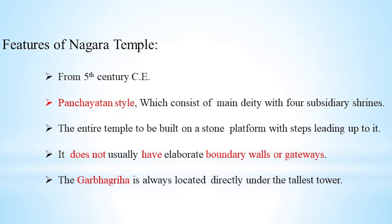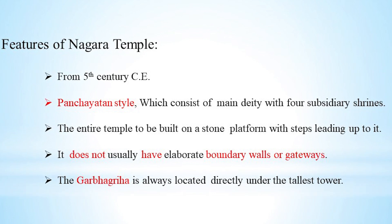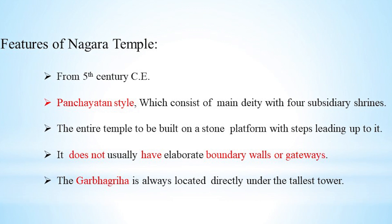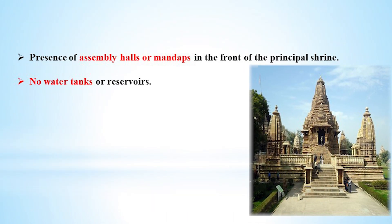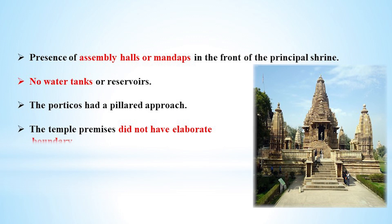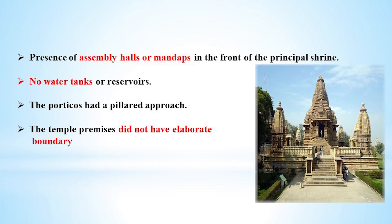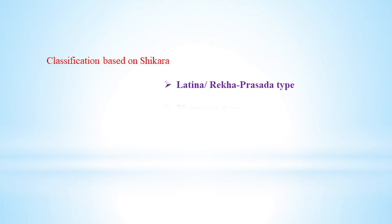The Garbhagriha is always located directly under the tallest tower. There is no water tank or reservoir in Nagara temples — this water reservoir or tank is a feature of Dravidian temples. The temple premises did not have an elaborate boundary. The Shikara classification is divided into 3 categories: first is Latina or Rekha Prasada, second is Pamsana, and third is Vallabi.